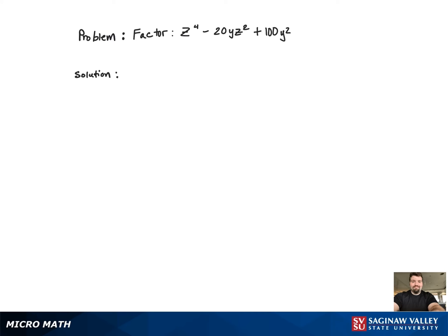Since the coefficient of the z to the fourth term is 1, we can begin by putting z squared at the beginning of both binomials.